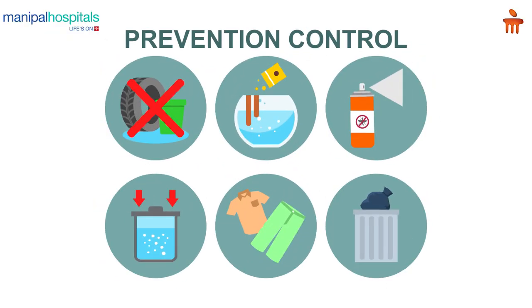We can prevent dengue by preventing mosquito bites. We should keep ourselves fully covered with clothing — wearing full shirts and full pants — and clear all water-clogged areas around us, because these are the fertile grounds for mosquito breeding. We should also use mosquito repellents, nets, and screens to avoid getting bitten.